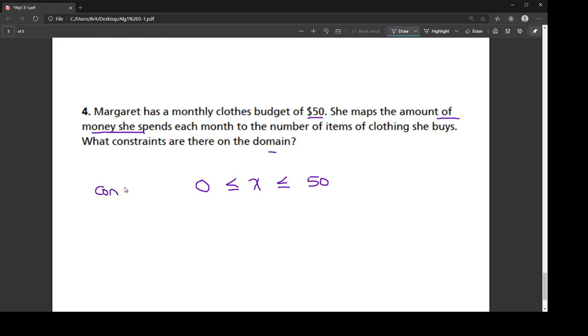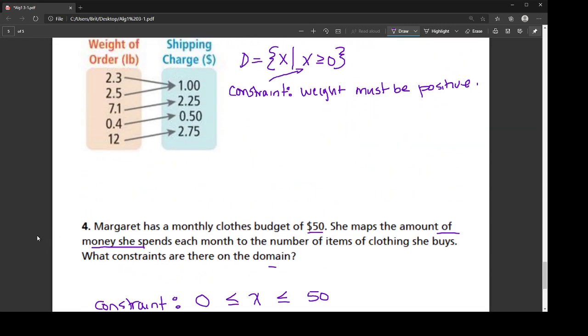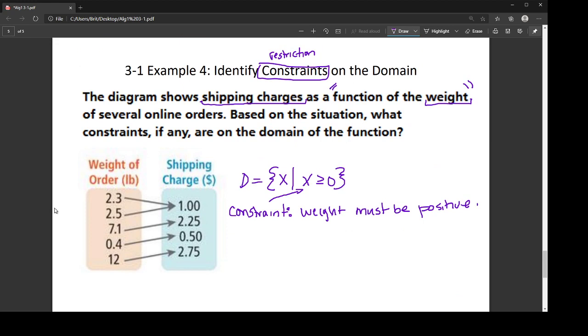This would be the constraint: all the x values between zero and 50. We're including the zero and the 50, because she could spend no money, or she can reach exactly what her budget is. That is identifying constraints on the domain. Until next time.